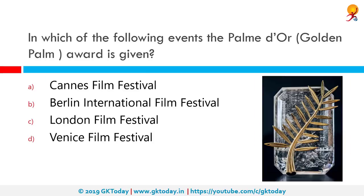In which event is the Palme d'Or or Golden Palm Award given? It is given at the Cannes Film Festival. This is the highest prize awarded at the Cannes Film Festival, introduced in 1955 by the festival's organizing committee. Previously, from 1939 to 1954, the highest prize at the festival was the Grand Prix du Festival International du Film.